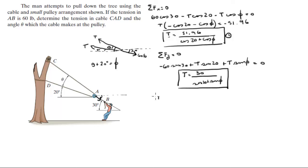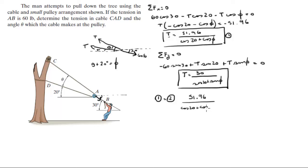Now I'll set the two T expressions equal to each other: 51.96 divided by (cosine of 20 plus cosine of phi) equals 30 divided by (sine of 20 plus sine of phi).